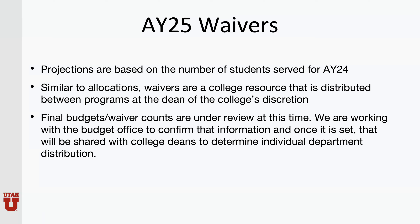Projections are based on the number of students served for academic year 24. So if you supported 100 students last year on tuition benefit, we are providing you a projection of 100 waivers for the coming year. Similar to the dollars and cents allocation, waivers are a college resource distributed between academic programs and departments at the discretion of your college's dean. If you have a need for additional waivers, that is a conversation you need to raise with your dean's office. Final budget waiver counts are under review; we anticipate these will be sent out to each college and department by June 20th, and your college will make the determination of the distribution and report that back to the graduate school, which will then be entered into the tuition benefit program.